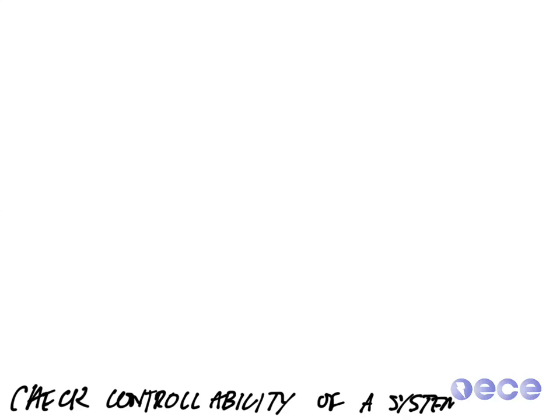So here's an example where we're going to check controllability of a system. We're going to do this in the state space because it's state space tools that allow us to check a system's controllability.